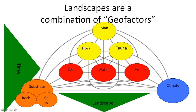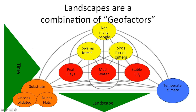Assuming you paused the video: there weren't many people around 700 years ago in those swamps because it's barely habitable — people can't work the land because there's far too much water. The water can't go anywhere. Even though there is a temperate climate and stable CO2, this excess water leads to swamp forests and peat.